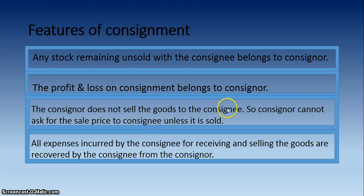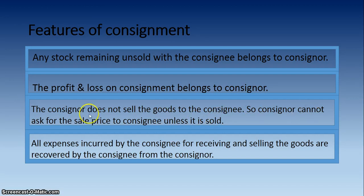The Consignor does not sell the goods to the Consignee. Mr. X gave 100 umbrellas to Mr. Y but did not sell them to Mr. Y — he only gave possession so that Mr. Y can sell them in the market. Therefore, the Consignor cannot ask the Consignee for the full price of goods unless they are sold. Mr. X cannot demand payment for all umbrellas from Mr. Y, because Mr. X only gave possession — not a sale.